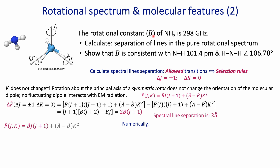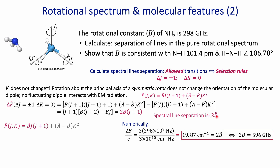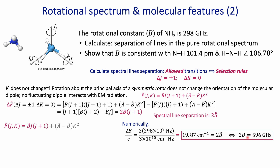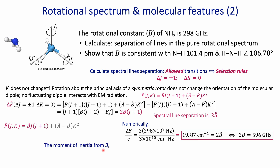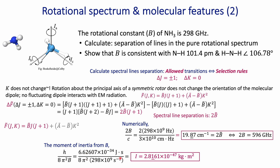Since I already know the rotational constant, I can calculate the separation as 2 times the rotational constant, both in wave numbers and in units of frequency. If you work directly in frequency since the rotational constant is already in gigahertz, you just multiply by 2. To convert to wave numbers, you divide by the speed of light. Then substituting all values and working out the dimensional analysis, I find that the moment of inertia calculated from the rotational constant is approximately 2.8 × 10⁻⁴⁷ kg·m².